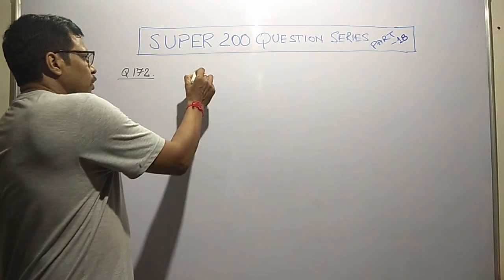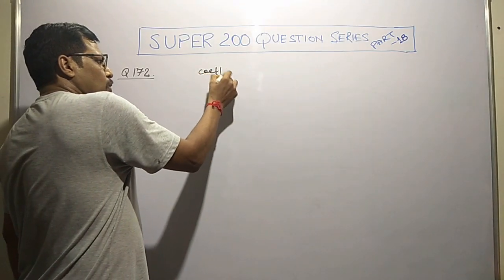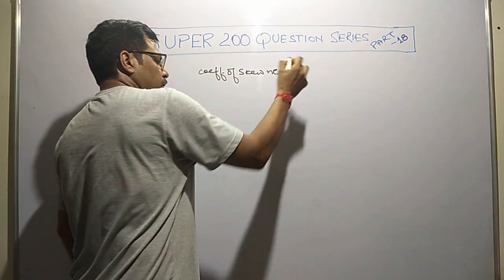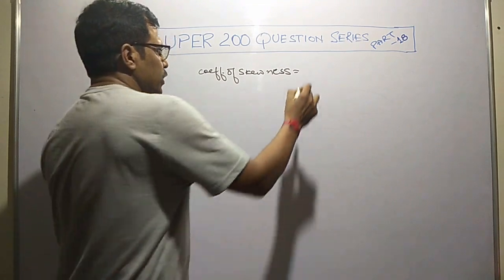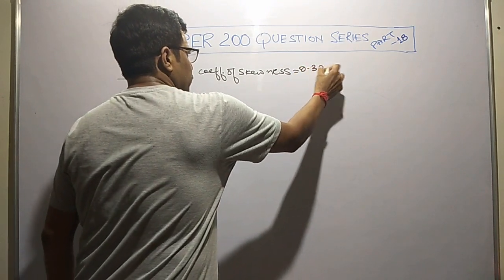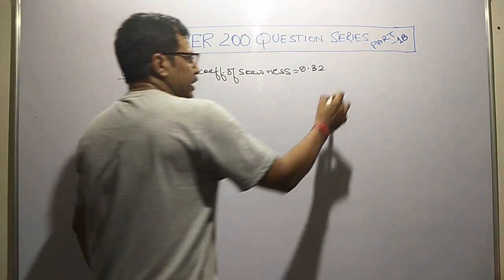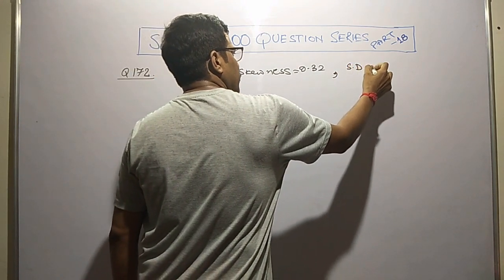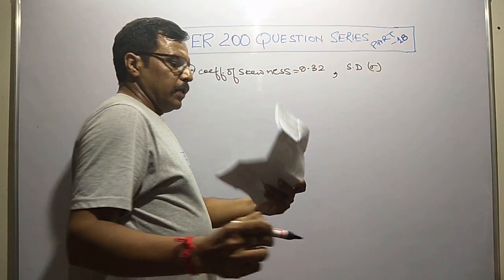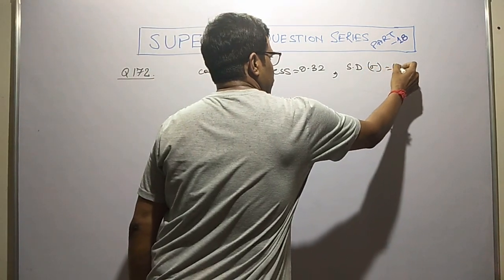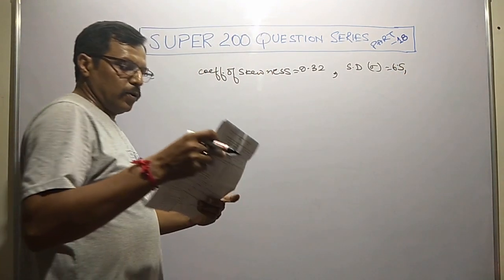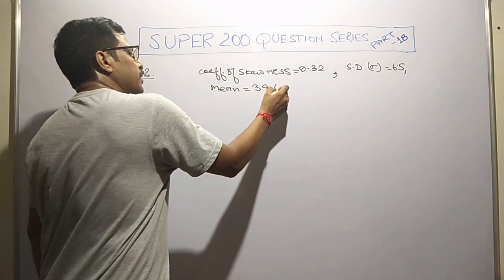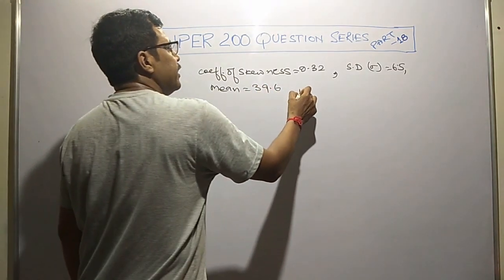Here it is question number 172. We are given coefficient of skewness, this value is 0.32, along with standard deviation 6.5 and mean 39.6. Median is demanded.